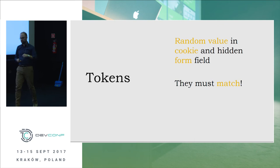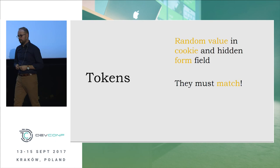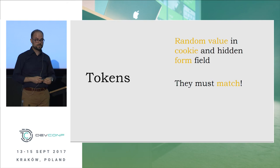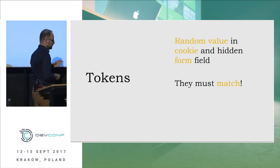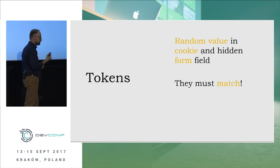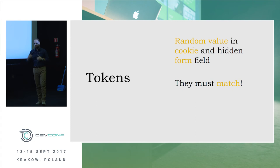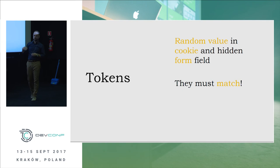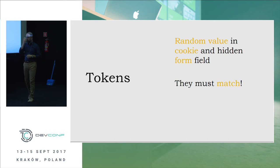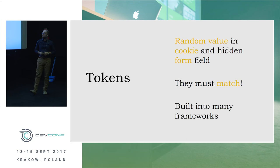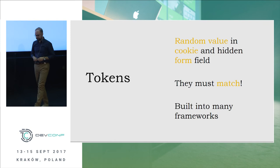To avoid storing every token on the server, the random value is encrypted with a key that's only stored on the server. The encrypted values are transmitted in both channels — cookie and form field. When the user submits, they are decrypted and checked. This eliminates the requirement to store state on the server side. The good news is that many web frameworks have this protection built in — ASP.NET, Rails frameworks, and Spring in the Java world all support it.